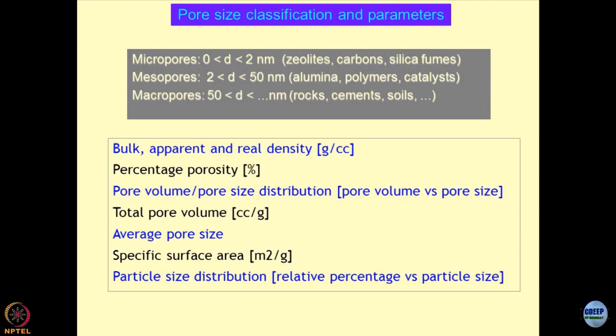Key parameters include percentage porosity, pore volume, pore size distribution analysis, total pore volume, average pore size, specific surface area, and particle size distribution. Fortunately, in today's world, the type of software we have allows these things to be done in a fraction of the time. Most of these analyses are statistical in nature and you can do a very comprehensive analysis of the sample you are studying for its pore structure.